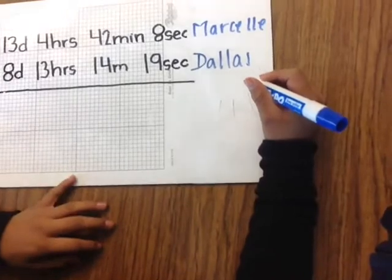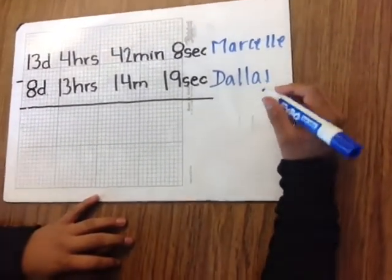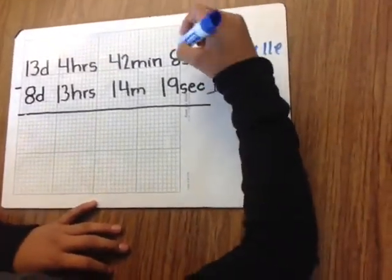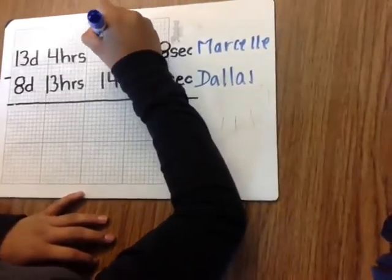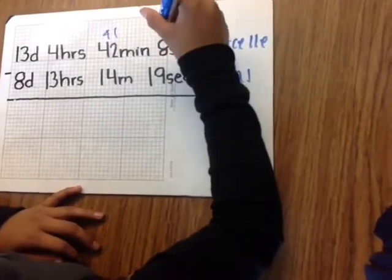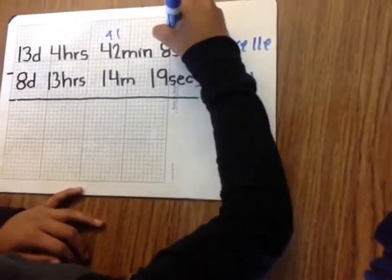Now, my partner Jenny is going to help you solve number 2. Okay, so we can't subtract 8 minus 19. We're going to borrow 1 minute from 42, and that would be 41 minutes. And since there's 60 seconds in 1 minute, it would be 68.